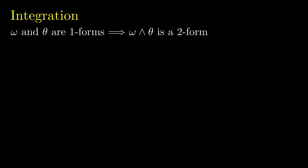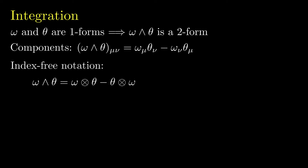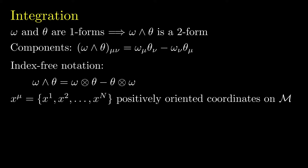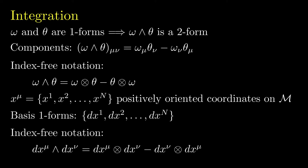Recall that if omega and theta are both one-forms, then omega wedge theta is the two-form with components omega-mu theta-nu minus omega-nu theta-mu. We can write this relation using index-free notation: omega wedge theta equals the tensor product of omega with theta minus the tensor product of theta with omega. Now, let x-mu with mu ranging from 1 to n denote a positively oriented coordinate system on the n-dimensional manifold. Then dx-mu is the set of one-forms dx1, dx2, and so forth. Using index-free notation, we have dx-mu wedge dx-nu equals the tensor product of dx-mu with dx-nu minus the tensor product of dx-nu with dx-mu.